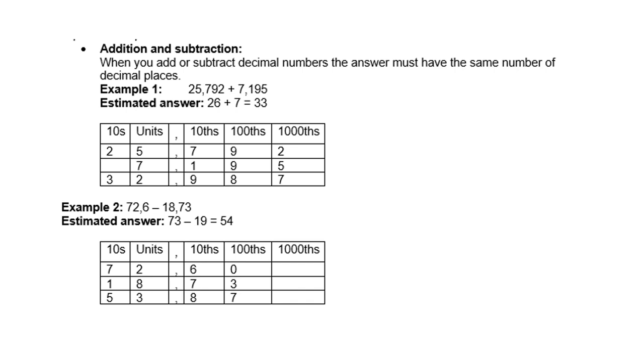The real answer is, start with adding up the hundredths. So 5 plus 2 is 7 hundredths. 9 plus 9 is 18 hundredths, so you have to carry 1. You carry the 1, you add it to the 7 and the 1, so it gives you 9.